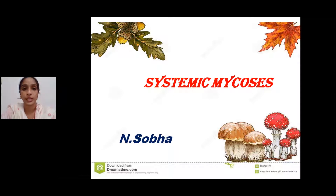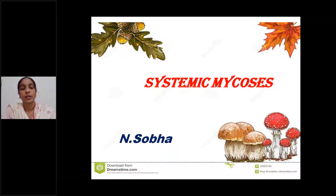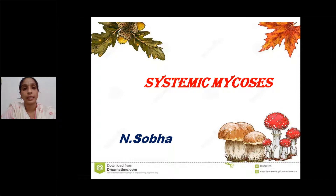Systemic mycosis means a group of fungi that cause infections in deep tissues — viscera and organs. Superficial mycosis means they are confined only to superficial layers like skin and fascia. Subcutaneous mycosis involves only the subcutaneous layer. Systemic mycosis is also called deep mycosis.